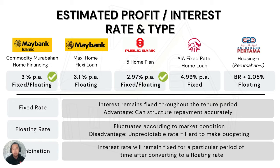Lastly is the combination rate, where the interest rate remains fixed for a period before changing to a floating rate. We chose only two institutions: Maybank Islamic with a low interest rate of 3% per annum, and Public Bank with the lowest rate among the five at 2.97% per annum. We chose these because both institutions offer fixed and floating rate types, which is favorable for the borrower.